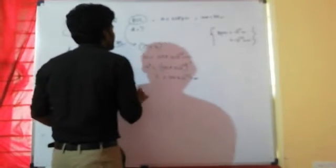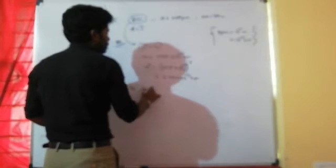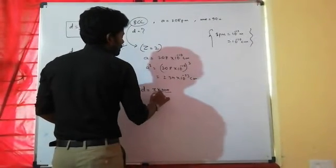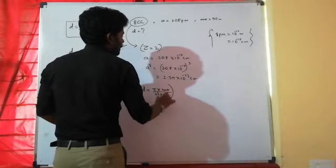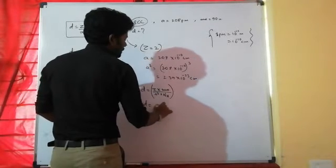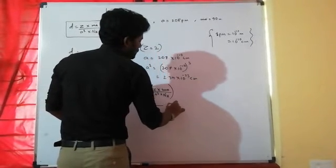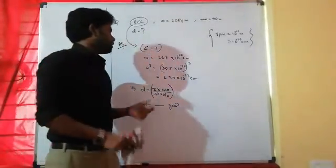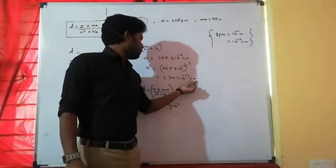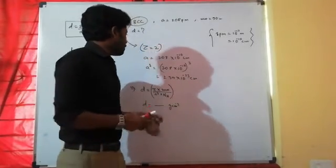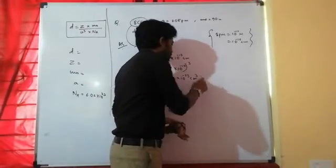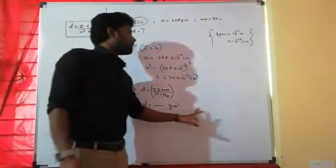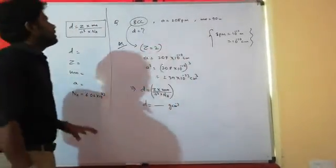Now put all values into the density formula: D equals z into m₀ divided by a-cube into Nₐ. The answer must be in grams per centimeter cube because density involves volume in centimeter cube. So the final answer will be D equals dash grams per centimeter cube.